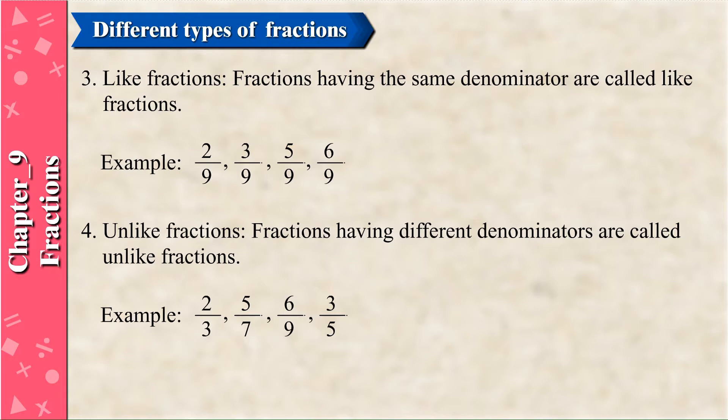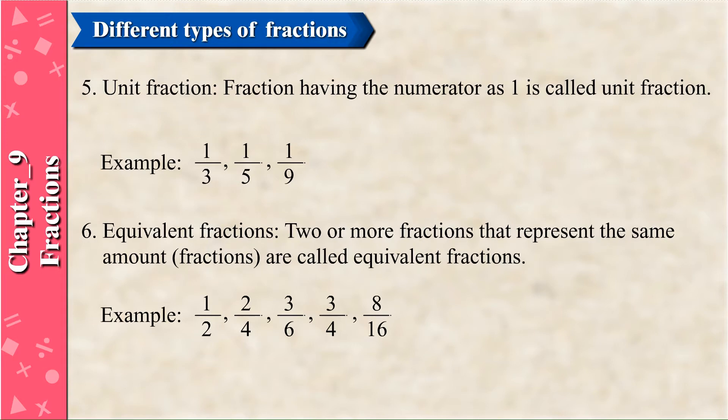Unlike Fractions: Fractions having different denominators are called unlike fractions. Examples: 2/3, 5/7, 6/9, 3/5. Unit Fraction: A fraction having the numerator as 1 is called a unit fraction.